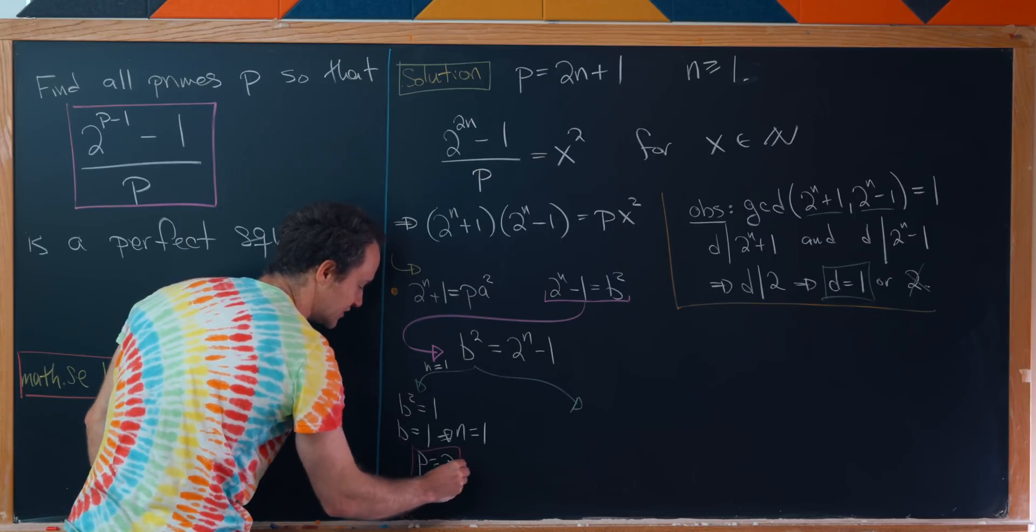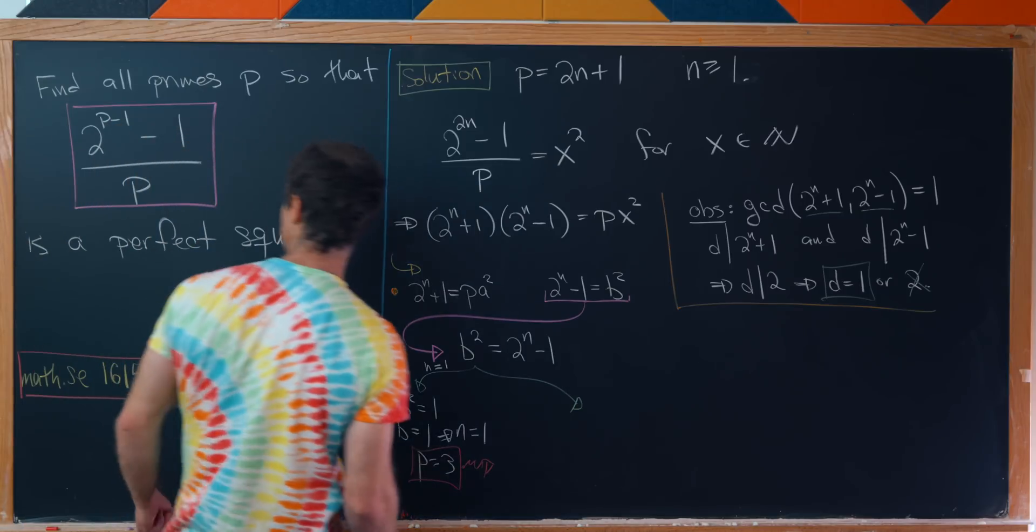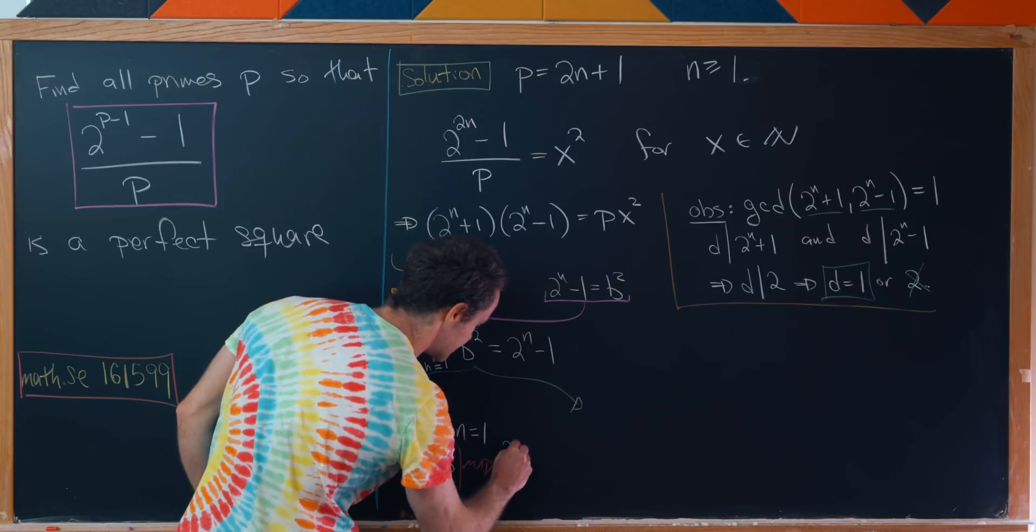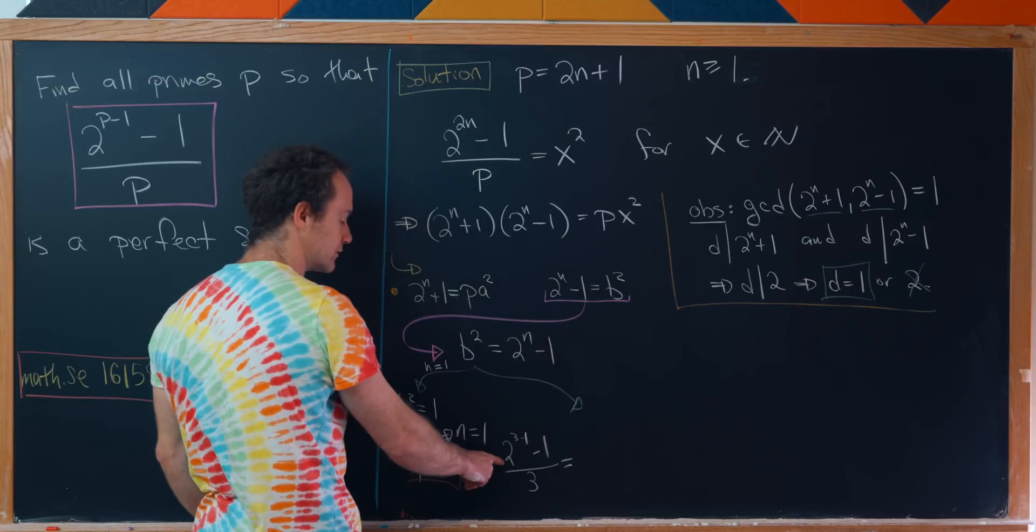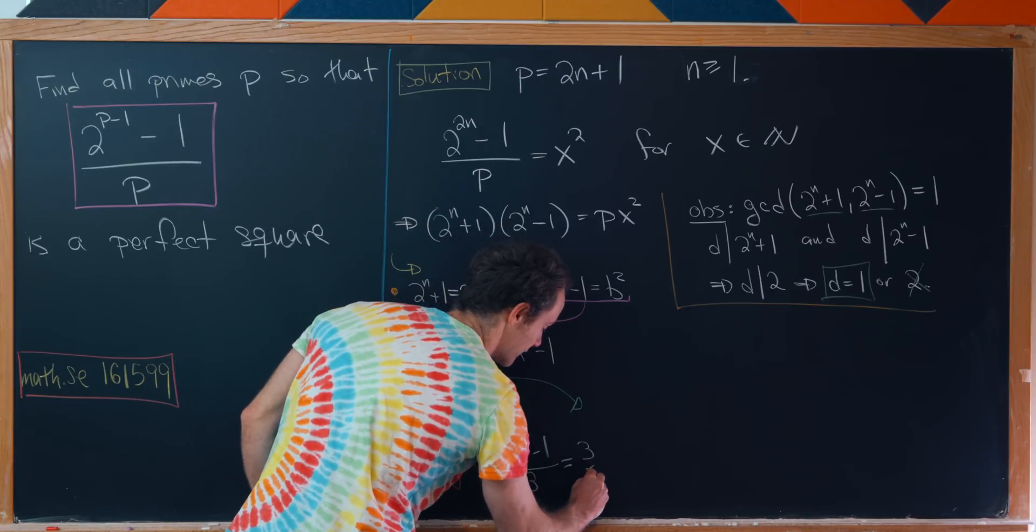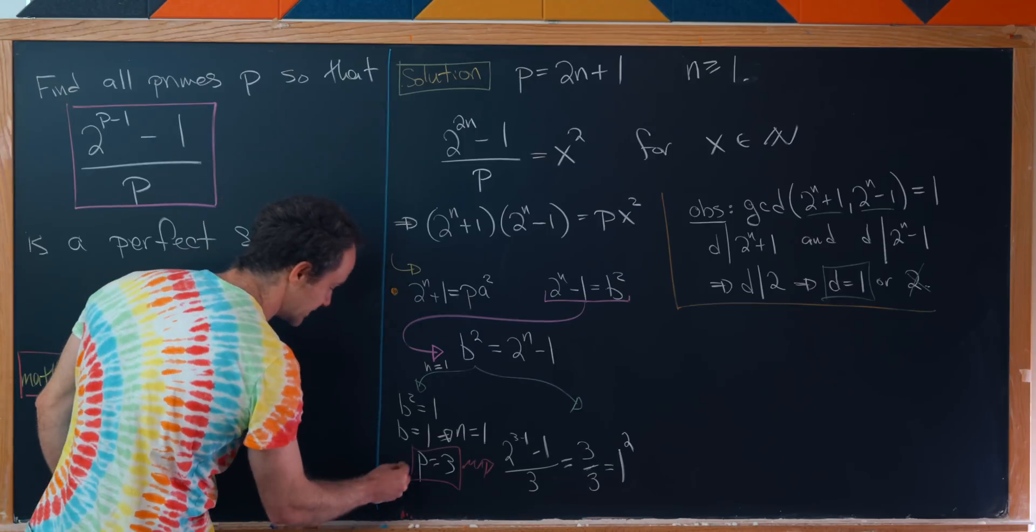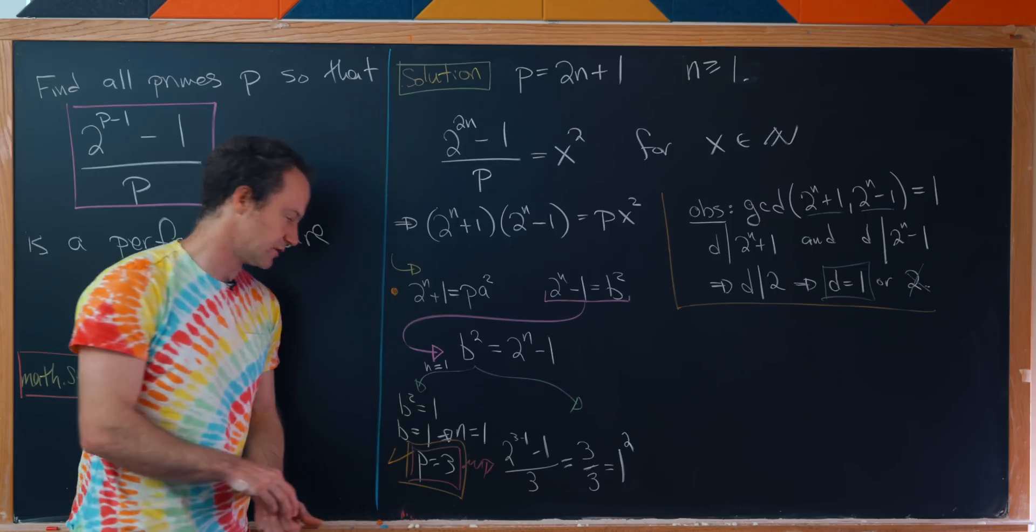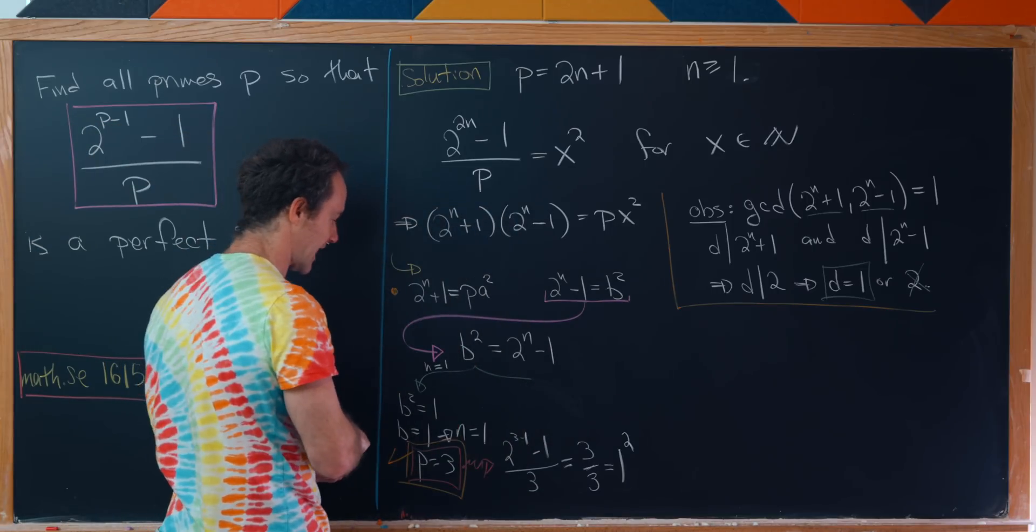Now we have to check if that is actually a solution by plugging it into our original equation. We'll have (2^(3-1) - 1)/3. That's equal to (2^2 - 1)/3, which is (4 - 1)/3, which is 3/3, which is 1, which is 1 squared. So yes, we're good to go. This is a solution.